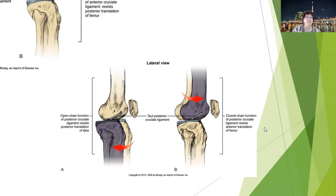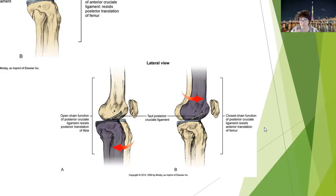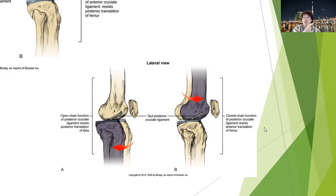The PCL resists posterior translation of the tibia in open chain, and anterior translation of the femur in closed chain. In open chain, the tibia is moving because the proximal segment is relatively fixed. In closed chain, the femur is moving because the distal segment is relatively fixed.